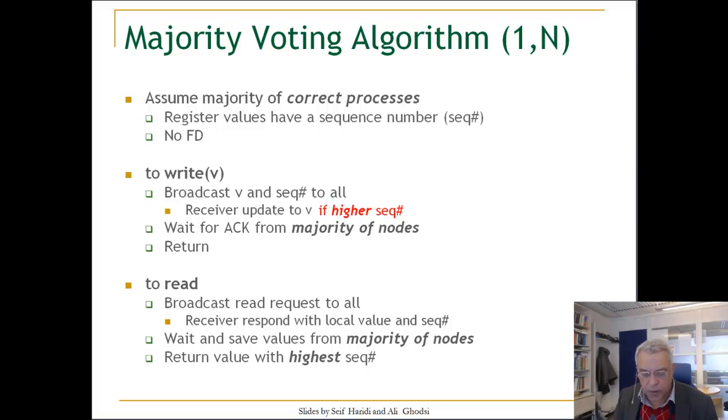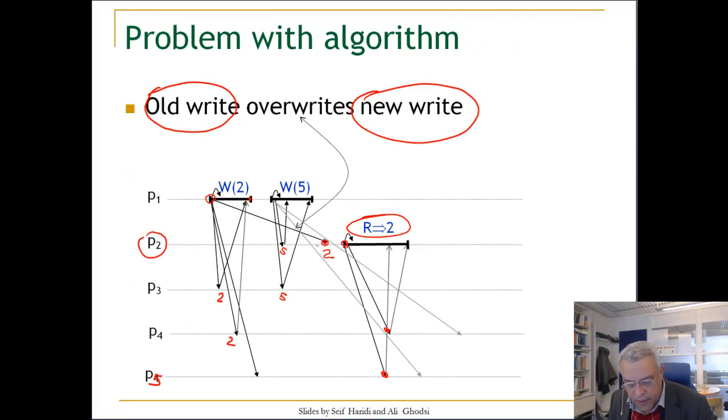We need to do a small modification of the algorithm. The modification is simply that if you receive an update as a node from another node, you update your register only if the sequence number associated with the value is higher. If we go back here, we see we should have disregarded this update.